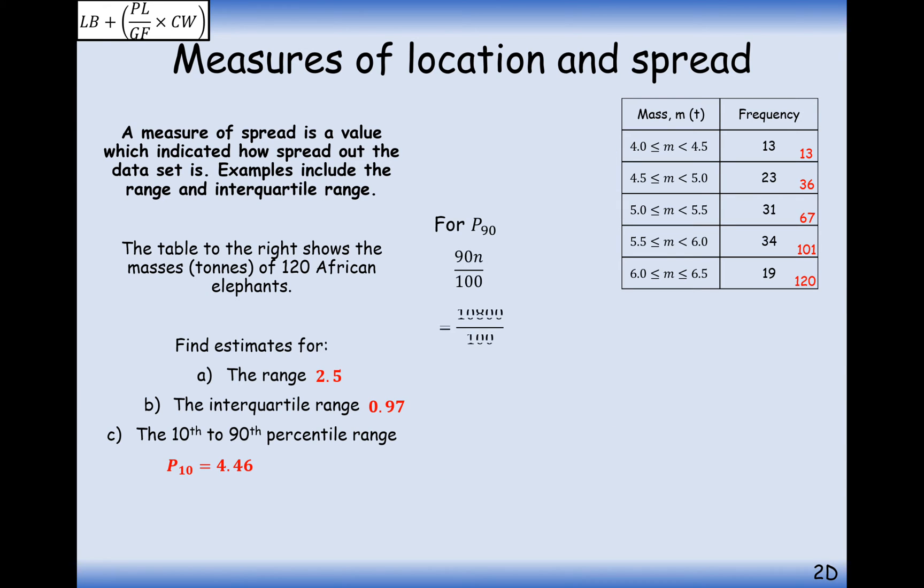For the P90 or the 90th percentile, find the 90% marker of 120, find which group that's going to be in, and then apply linear interpolation as well. So it's the 17th data value into this group out of 19, class width of 0.5, add on to the lower bound of 6.0, and you get your final answer, 6.18. So the percentile range is going to be 6.18, take away 4.46, and we get 1.72.